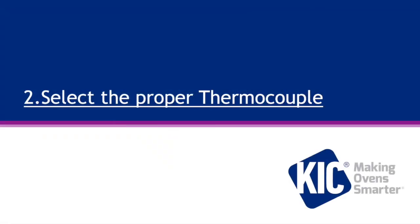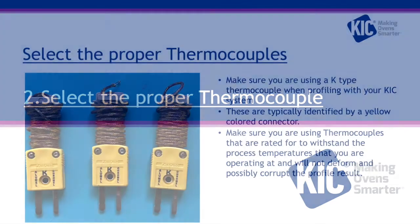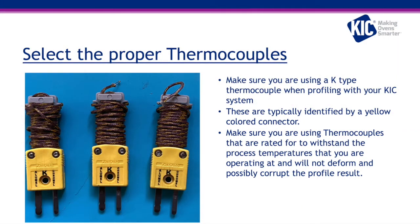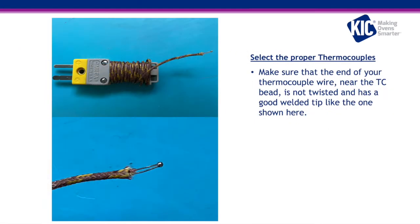Select the proper thermocouples. Make sure you are using a K-type thermocouple when profiling with your KICS system. These are typically identified by a yellow colored connector. Make sure you are using thermocouples that are rated to withstand the process temperatures that you are operating at and will not deform and possibly corrupt the profile results. Make sure that the end of your thermocouple wire near the TC bead is not twisted and has a good weld tip like the one shown here.